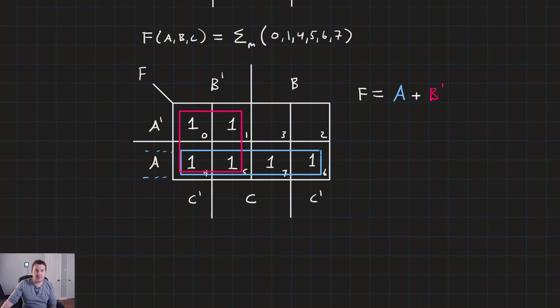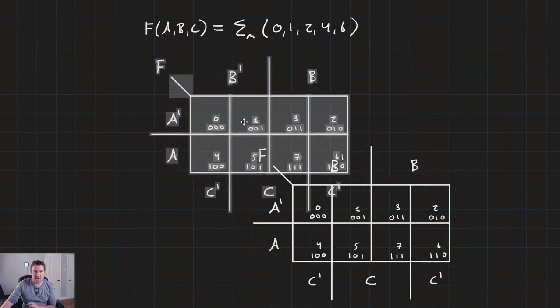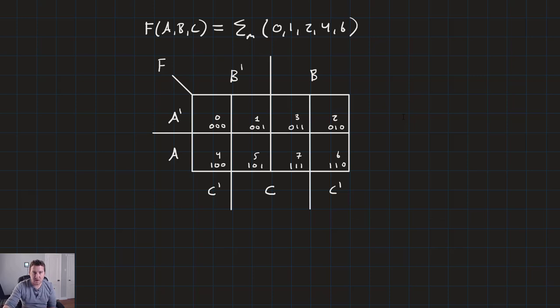So let's do one more example. Let's do this. Let's say that F is a function of three variables, A, B, and C, and is equal to the sum of minterms 0, 1, 2, 4, and 6. Now let's go ahead and drop our map in. I totally forgot to copy the cleaned up version. So let me clear these out. There we go, nice and clean. So now we go ahead and add our ones in the cells that are labeled in the sum of minterms expression. So 0, 1, 2, 4, and 6.